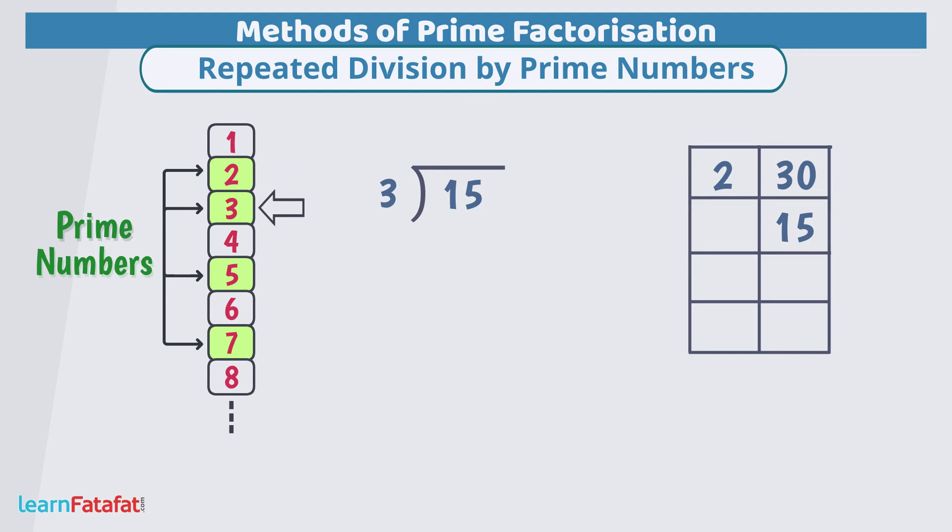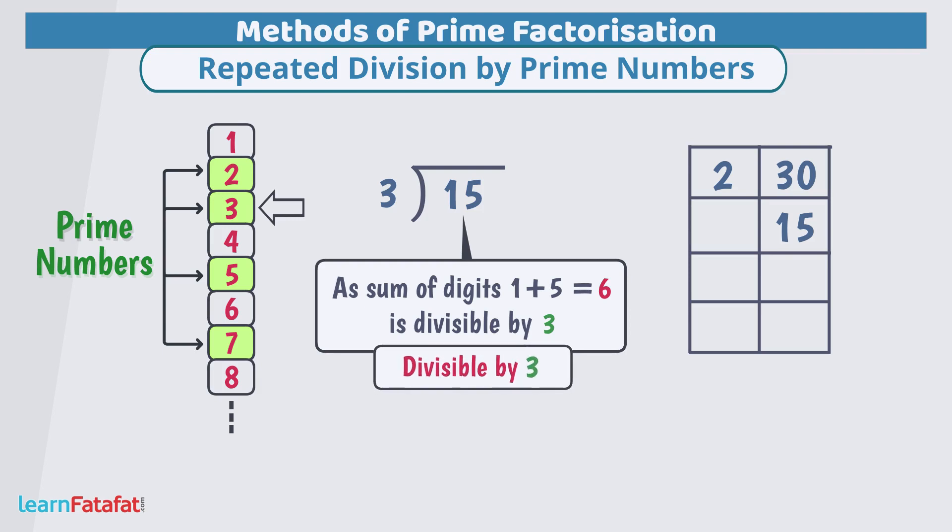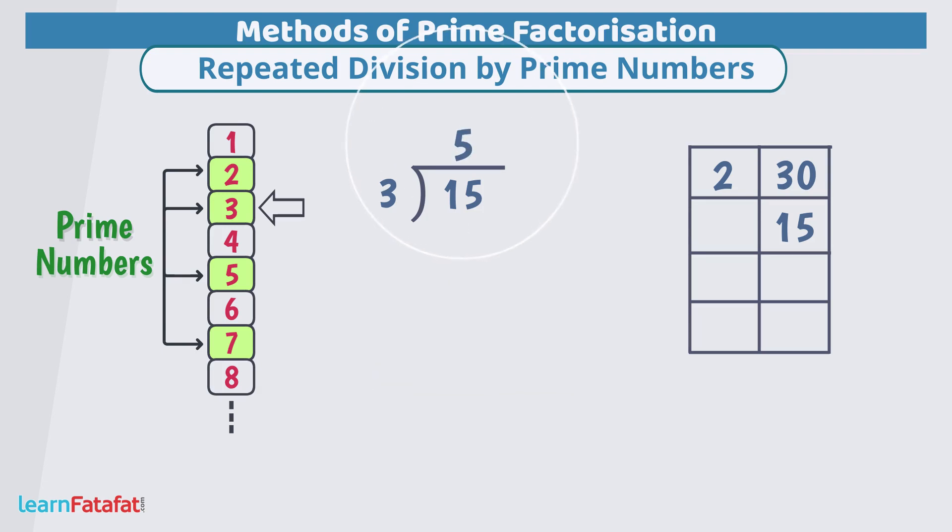According to test for divisibility, sum of digits is divisible by 3. So, this number must be divisible by 3. So, let's divide it. Quotient is 5. Write 3 here and quotient 5 here.